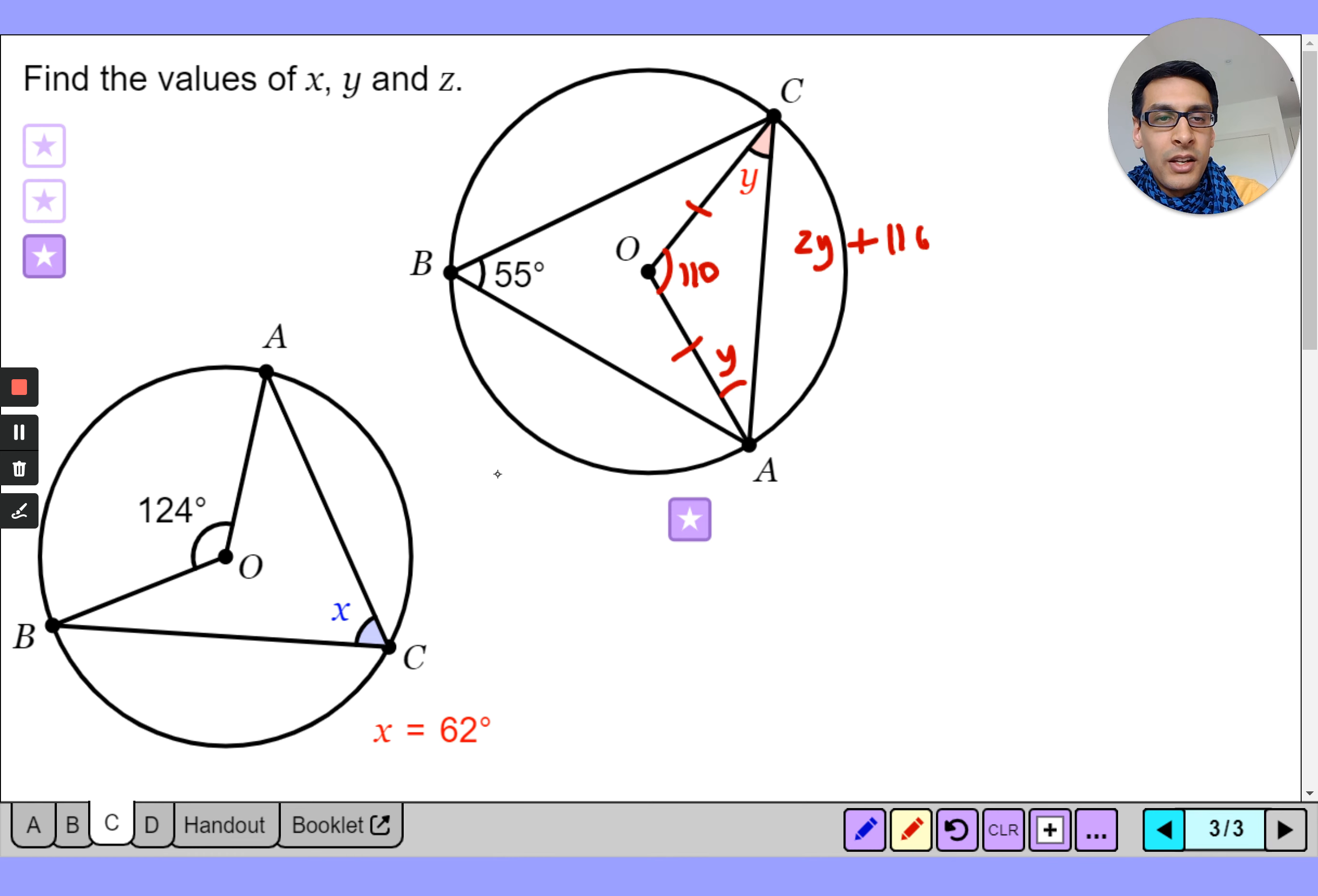Because it's an isosceles, and then we do 180 minus 110 divided by 2 and we get your answer. Hopefully you got 35 degrees for that and here's your final question, question z, pause the video and have a go.